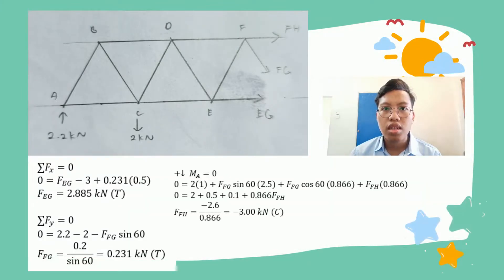So in solving the question, we need three values: force FH, force FG and force EG. We will see the cut at bars FH and EG. Previously, the value we can find is force FG. We will use sum of FY, and sum of FY equals zero. We substitute into the equation. Zero equals 2.2 because we already have the value of AY minus 2, we already have the value at point C, minus force FG sin 60. After that, we will get force FG equals 0.231 kN. That is tension.